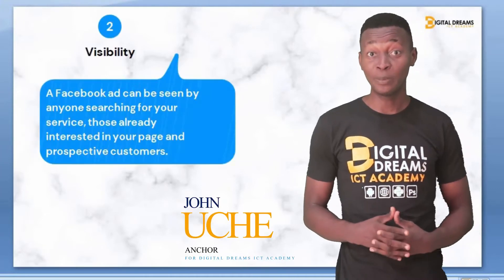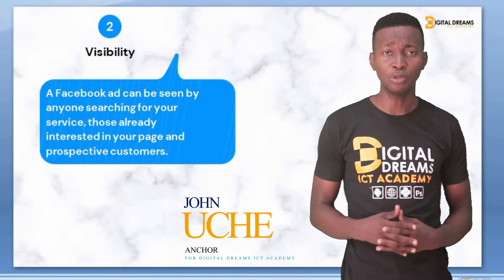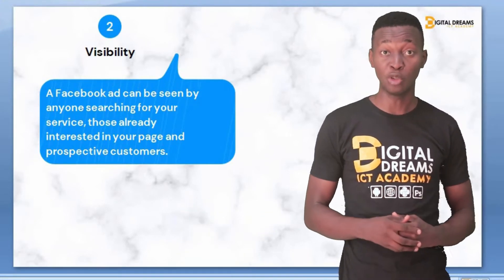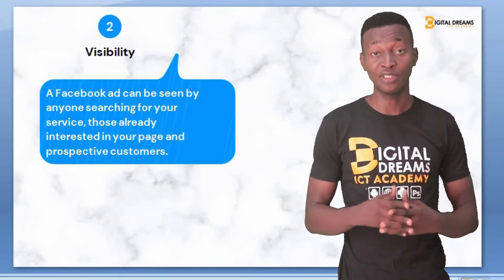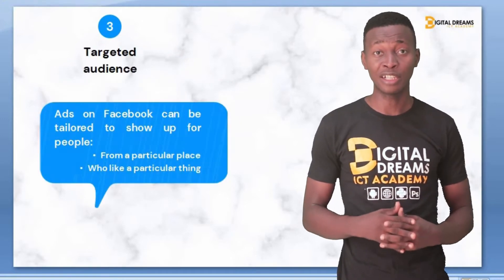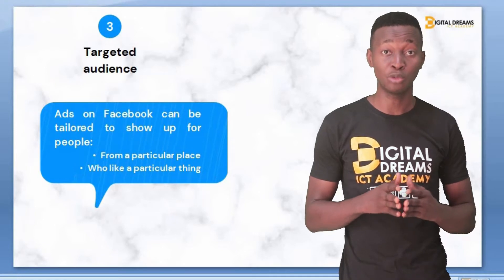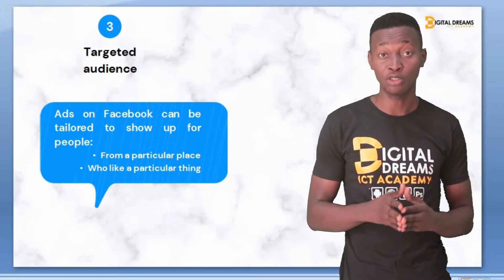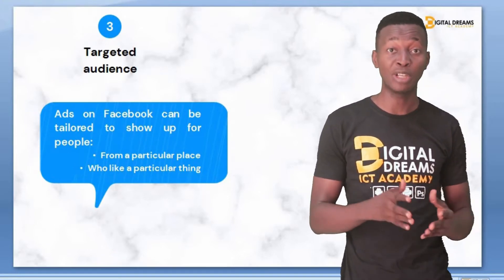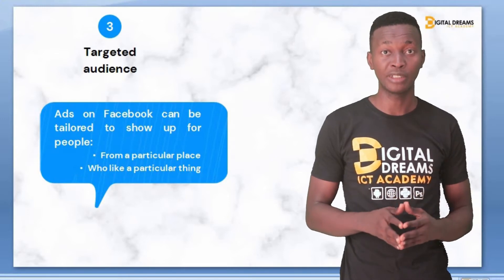On the point of visibility, your Facebook ads can be shown to anybody who is interested in your service, who is attached to your page, or who is searching for a related product or vendor. The next point is a targeted audience — you can tailor your Facebook ads to reach only people who like or are interested in a particular thing.